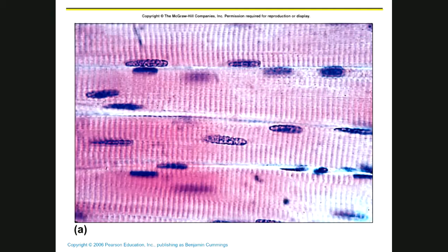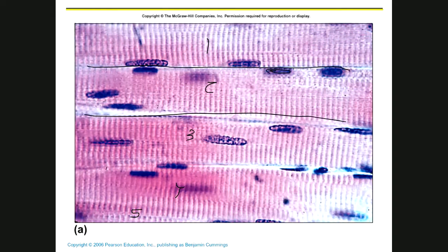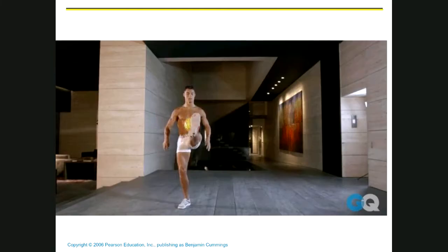Here I can count maybe four or five cells down here, but again, there's the cell right there. There's the cell, there's the nuclei, there's the stripes — the striations. On the PowerPoint, there's actually a lot of movements being done, and all those movements are with skeletal muscle because skeletal muscle is voluntary.